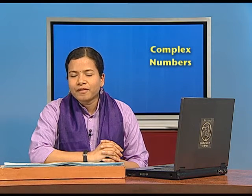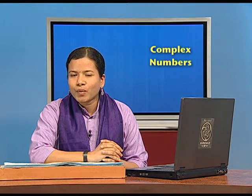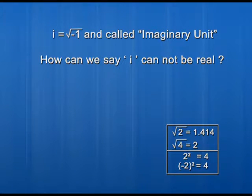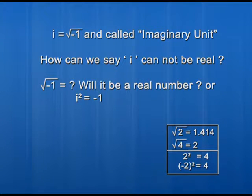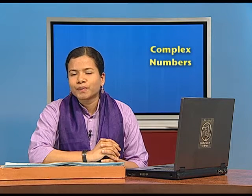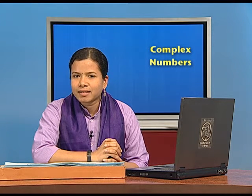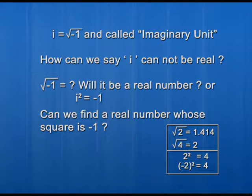Now you may think: we understand that i is the square root of minus 1, but how can we say that i cannot be real? Up till now, you must have noticed that we have always found square roots of positive numbers only. For example, square root of 2 is 1.414, which is a real number, and square root of 4 is 2, which is an integer. But can you find a real number which will be the value of square root of minus 1? Let me transform this question. Since i equals square root of minus 1, if we square both sides, then i squared equals minus 1. The same question can now be asked as: can I find a real number whose square will be minus 1?